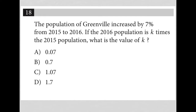This question says the population of Greenville increased by 7% from 2015 to 2016. I'm going to treat this like a translate word problem question. For that first sentence, I'm going to write 2015 arrow 2016, and above the arrow I'm going to say up 7%.